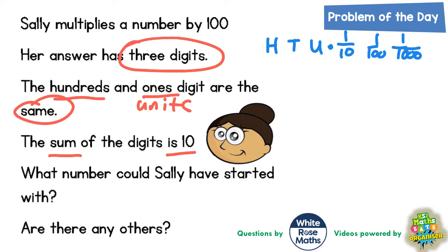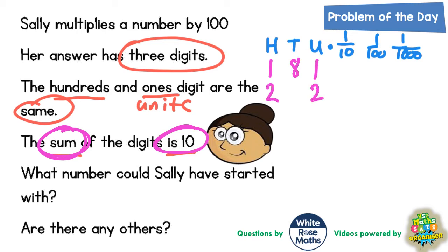It says the hundreds digit and the ones digit are the same. So let's start to think what that could actually mean. We could have a one in the hundreds digit and the units digit, but the sum of the digits needs to be 10, so that would make the tens digit eight — one, eight and one makes ten. We could have a two and a two, which would make the tens digit six. We could have a three and a three, which would make the tens digit four.